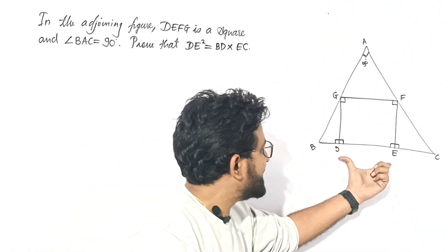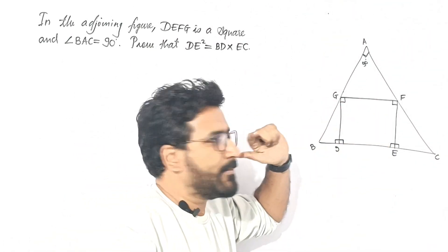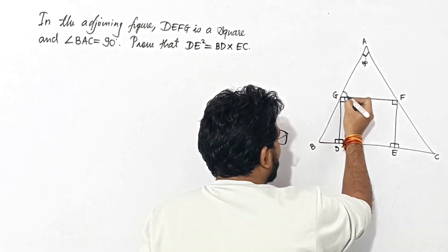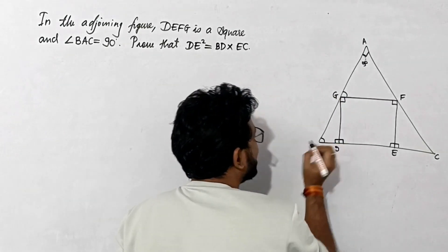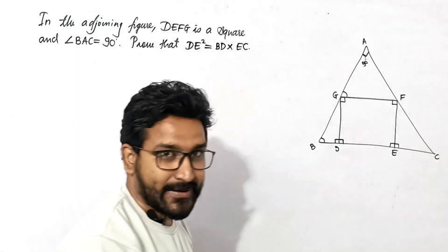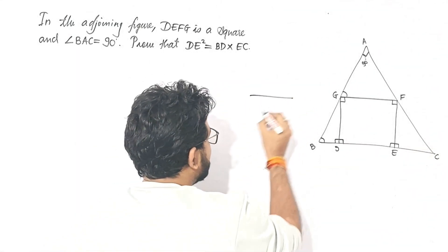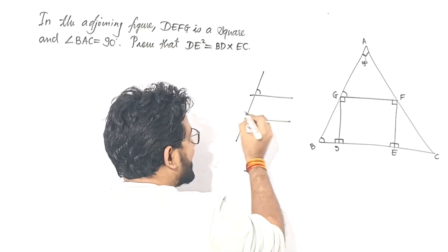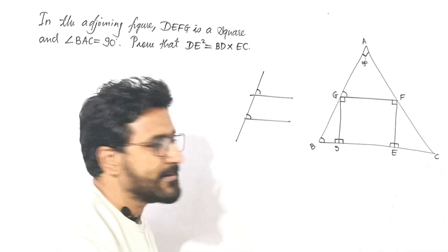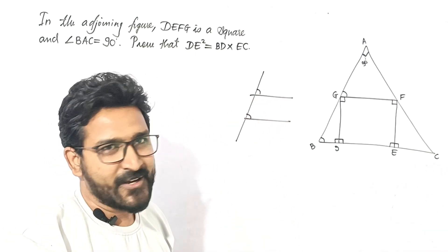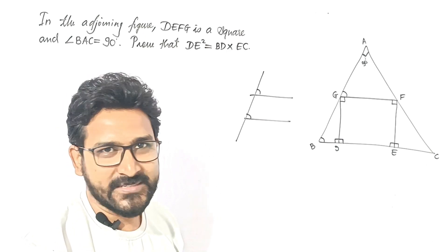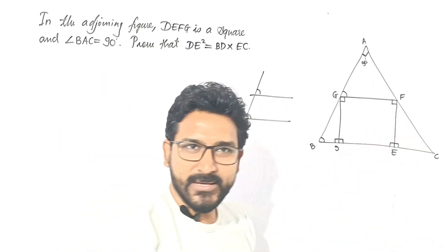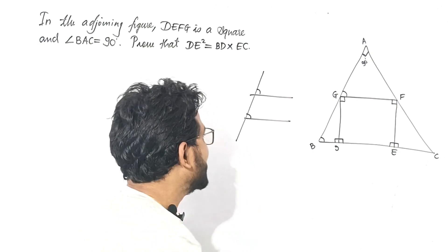So BC and GF are parallel. If BC and GF are parallel, then the corresponding angles are equal. Let AB be the transversal — this angle and this angle are equal, they are corresponding angles. So we have two angles established. In the same way, these two triangles can be proven similar.